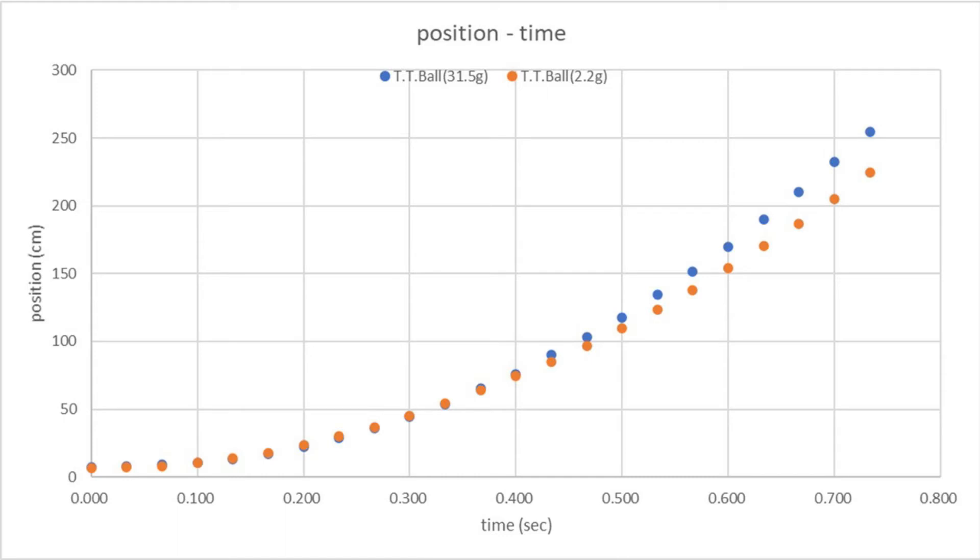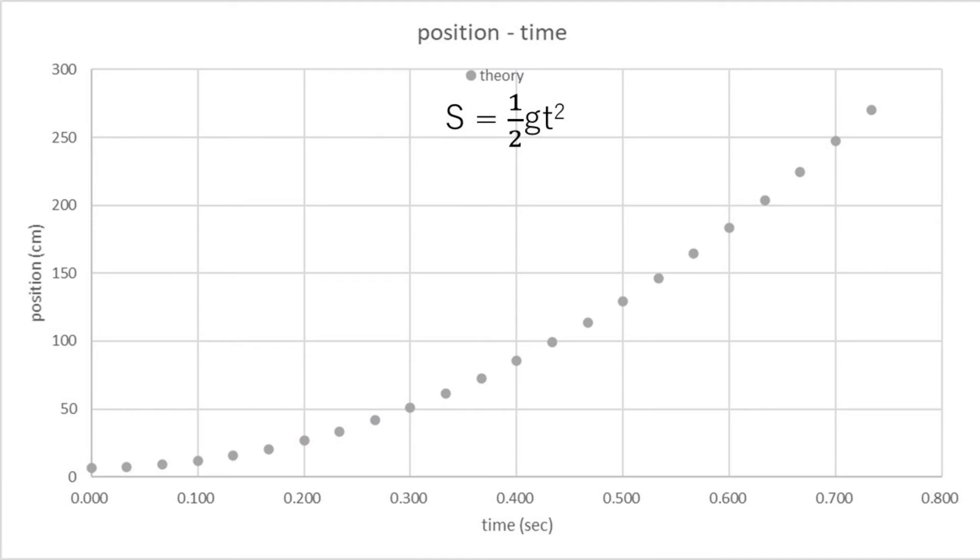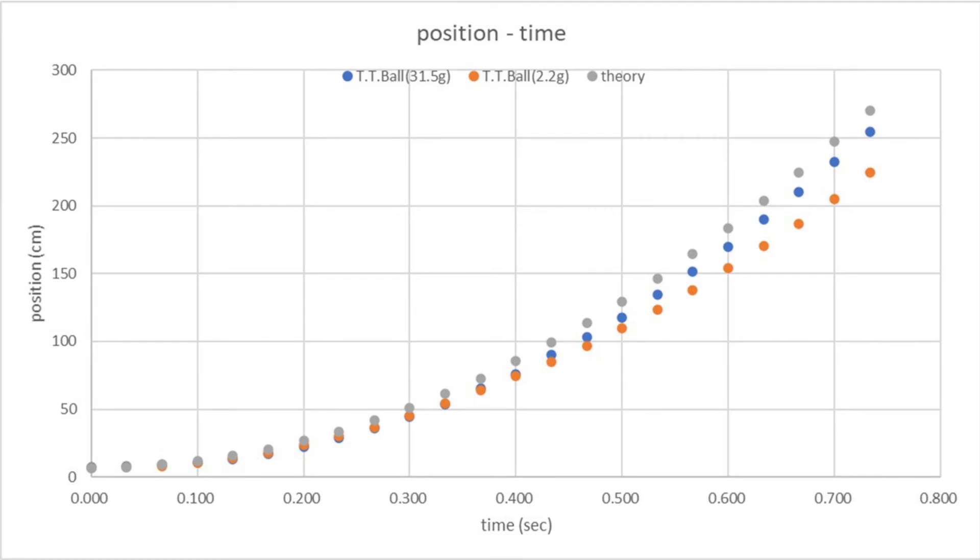This is the position and time graph of two balls. This shows the calculated values from free fall theory. Let's compare it with the measured results.